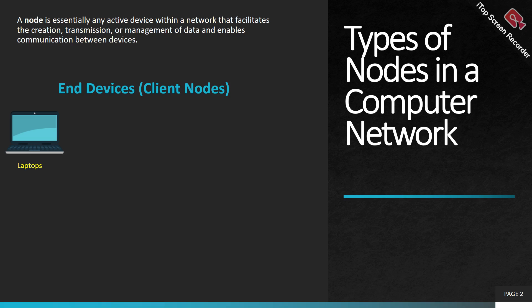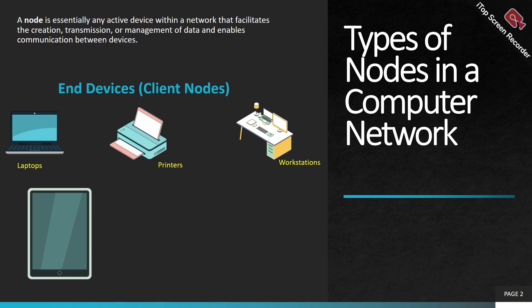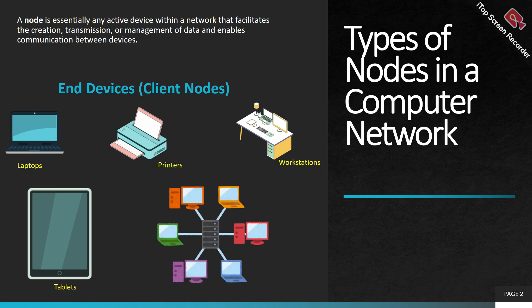They will be essential and active devices participating in the communication, creation, transmission, and management of data. Client nodes can be a laptop — whenever they are actively participating in the network, they will be connected to some transmission medium, which we'll check in further upcoming videos. Client nodes can be your laptop, your printer, and so on.